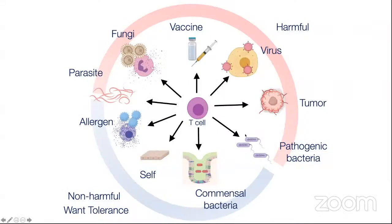Since this is a broad audience, I wanted to start with a more philosophical discussion about what tolerance is. The definition of tolerance is the ability or willingness to tolerate something that one does not necessarily agree with. This is definitely the problem the immune system has to deal with — T cells have randomly rearranged receptors on their surface that can recognize antigens from a variety of sources: harmful things like bacteria, viruses, even tumors. We want robust responses against those, but we also have self-antigens, commensal bacteria, and allergens that we want tolerance to. This is a very fine line the immune system must walk.